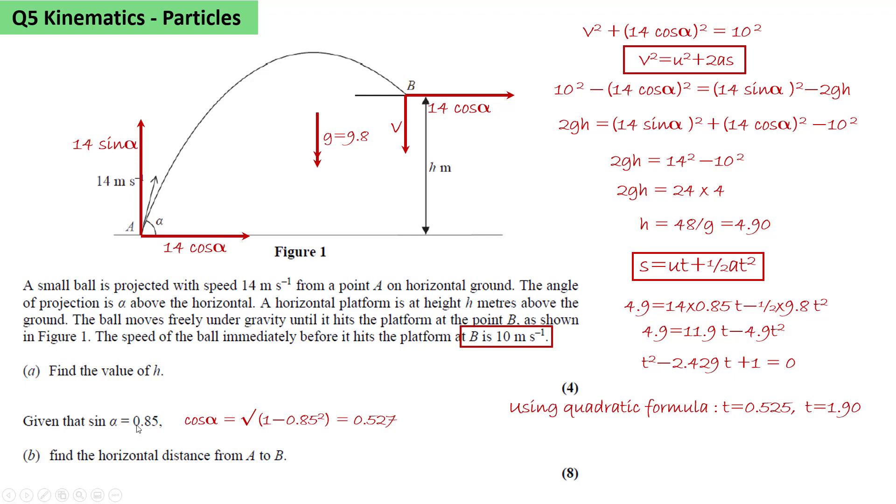We know that the sine of alpha is 0.85, so we can calculate the cosine of alpha. That would be the square root of 1 minus 0.85 squared, which is 0.527. And then the distance AB will be the horizontal velocity, 14 cos alpha, 14 times 0.527 times 1.9 the time, which is 14.0 meters.